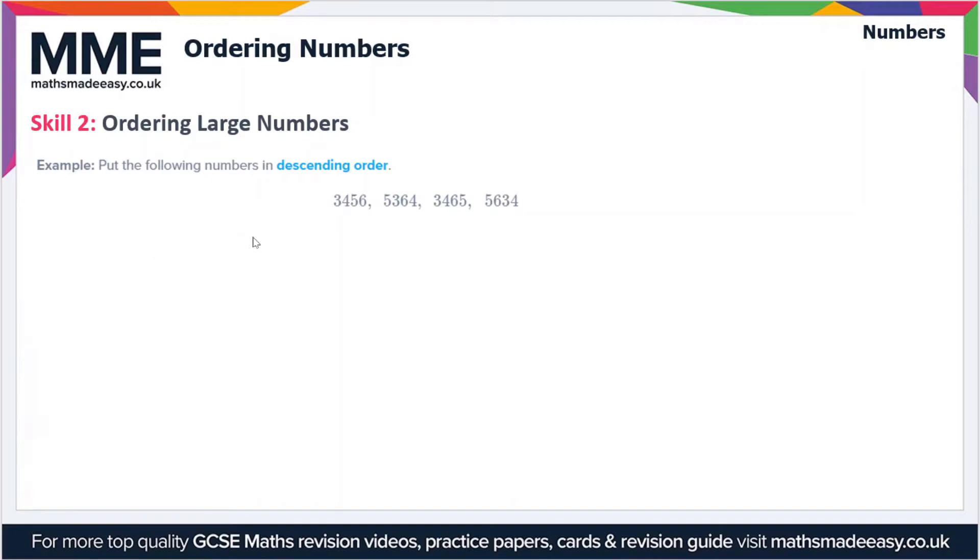Moving on, let's look at ordering large numbers now. So we have to put the following numbers in descending order, so this means from largest to smallest, so we're looking for the largest number first. So we've got 3456, 5364, 3465, and 5634.